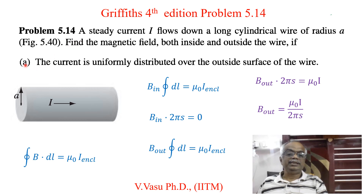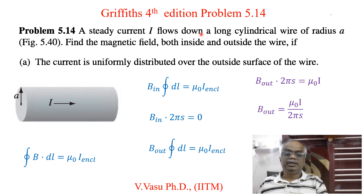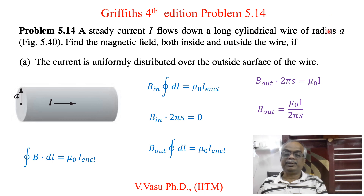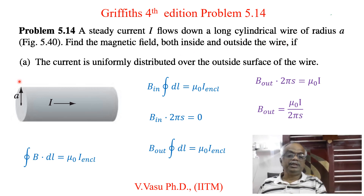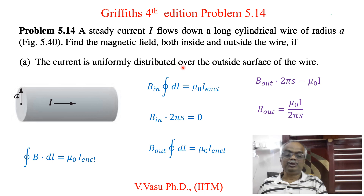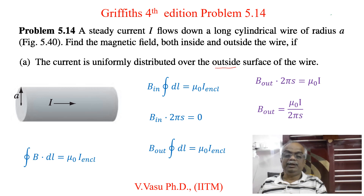First we will see Part A. A steady current I flows down a long cylindrical wire of radius A as shown in the figure. Find the magnetic field both inside and outside the wire, if the current is uniformly distributed over the outer surface of the wire. That is one important point — the outer surface of the wire.